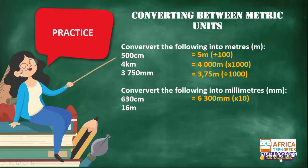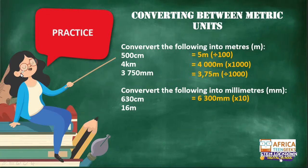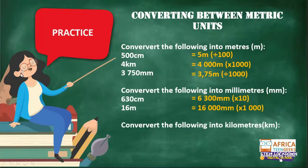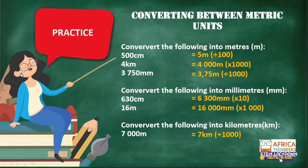Next: 16 meters — write that in millimeters. There are 1,000 millimeters in every meter, so 16 times 1,000 gives us 16,000 millimeters. And the last one: 7,000 meters — convert to kilometers. We divide by 1,000 and we get 7 kilometers.